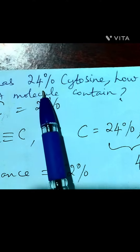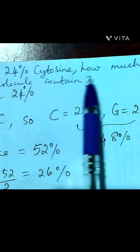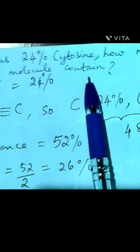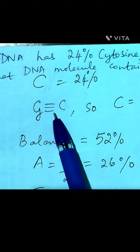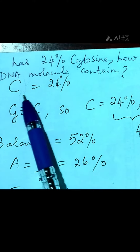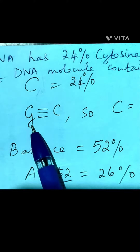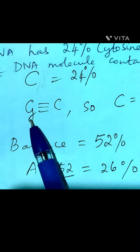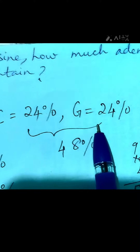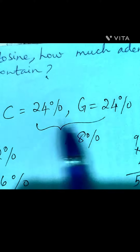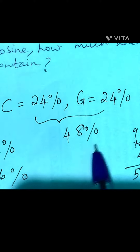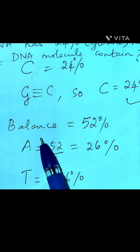If DNA has 24% cytosine, how much adenine will that DNA molecule contain? Cytosine is 24%. According to the complementary base pair rule, guanine pairs with cytosine, so if cytosine is 24%, then guanine will also be 24%. Both of them together will be 48%.